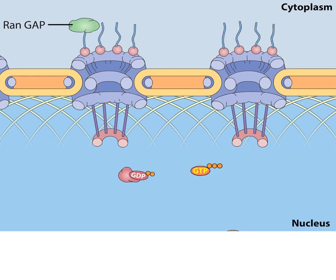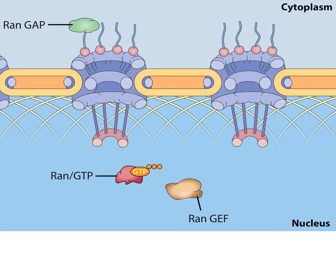In the nucleus, another protein called RAN-GEF for Guanine Nucleotide Exchange Factor stimulates RAN-GDP to release its GDP and pick up GTP. In this form, RAN-GTP can disrupt the binding of importin and its cargo, triggering the release of the cargo in the nucleus.